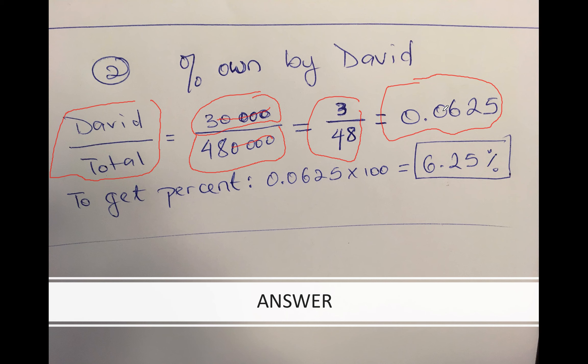To get it in percent, you need to multiply by 100. When you multiply by 100, the decimal moves two places - one, two. You're left with 6.25%. So David only owns 6.25% of the business. He doesn't own that much.